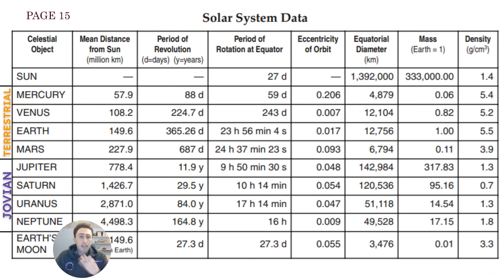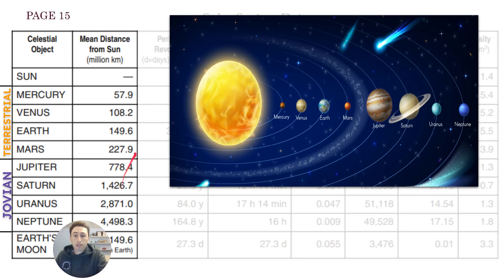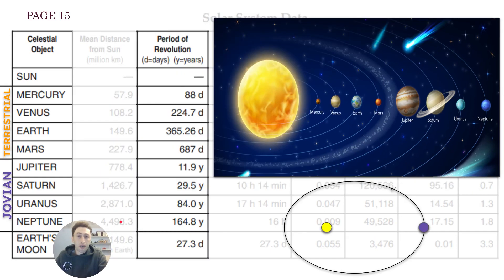In the reference table, you have different data about our solar system. The first four planets — Mercury, Venus, Earth, and Mars — are terrestrial, and the other four are Jovian. First, you have the mean distance from the sun, which means how far away they are from our star. Mercury is the closest and Neptune is the furthest away from the sun.